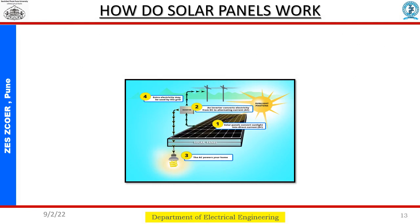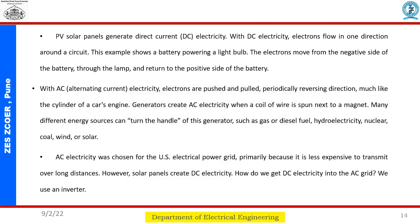In the next slide we discuss how solar panels work. PV solar panels generate direct current (DC) electricity, where electrons flow in one direction around a circuit. With AC electricity, electrons are pushed and pulled periodically — similar to a car engine's cylinders — and generators create AC electricity when a coil of wire is spun next to a magnet. AC electricity was chosen for the US electrical grid primarily because it is less expensive to transmit over long distances. Since solar panels create DC electricity, we use an inverter to feed it into the AC grid.